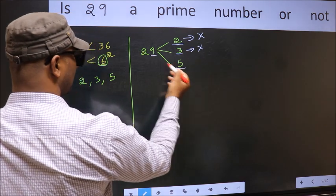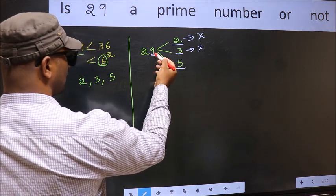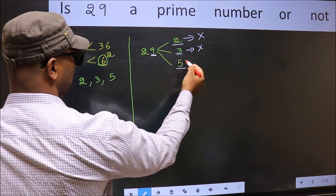Next number, 5. Last digit is neither 0 nor 5. So, this is not divisible by 5.